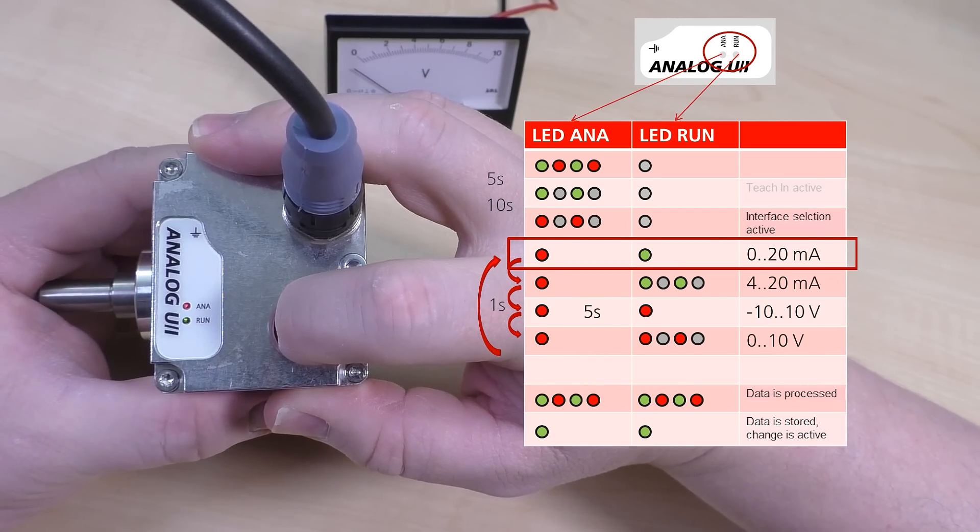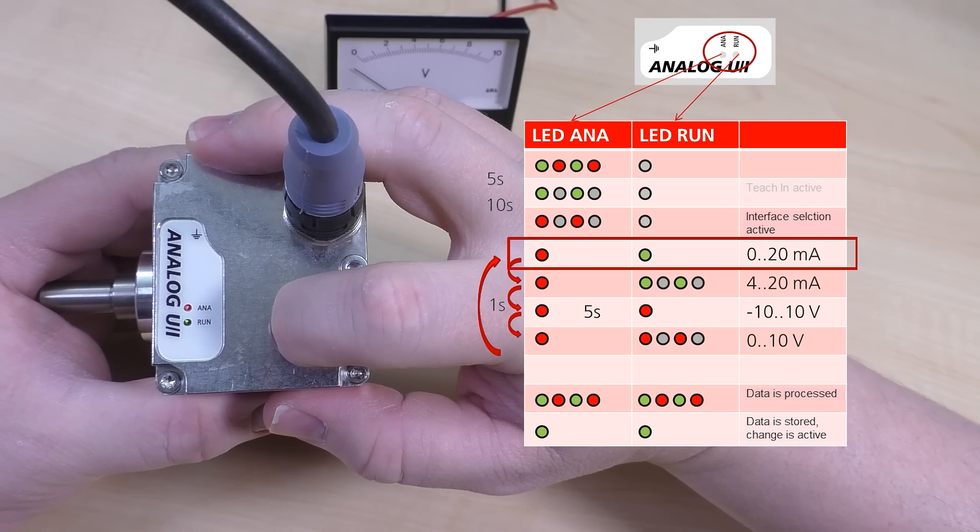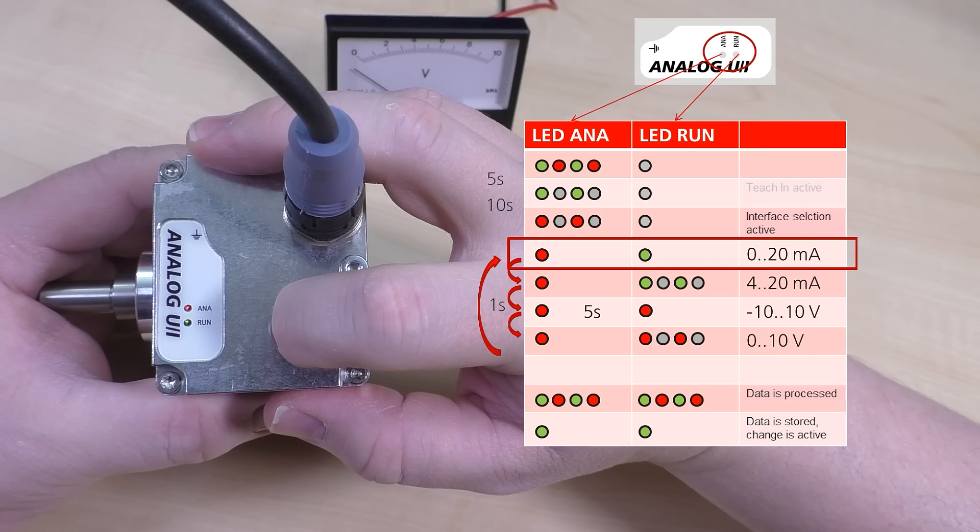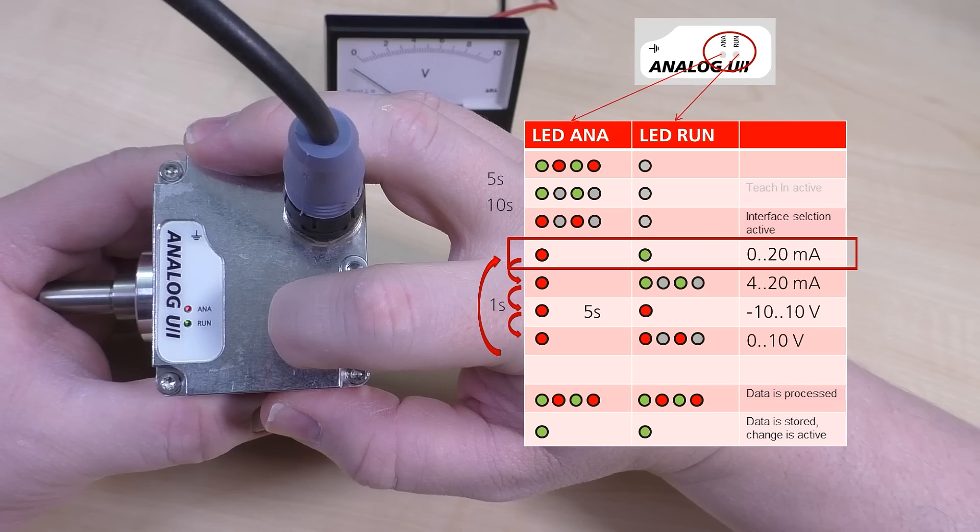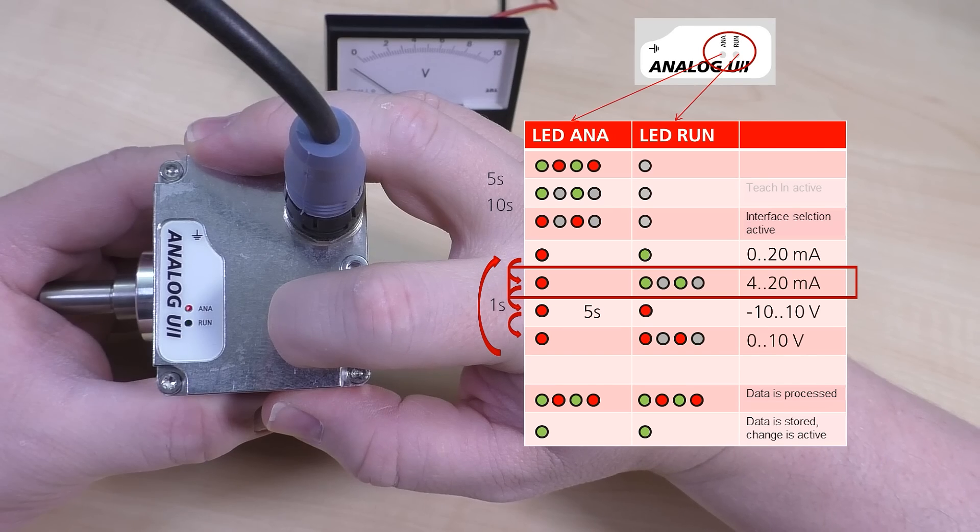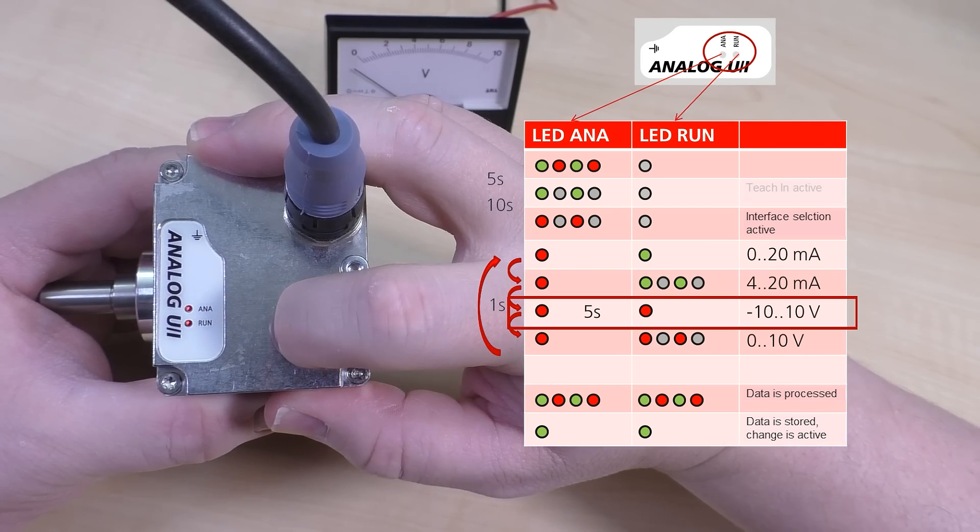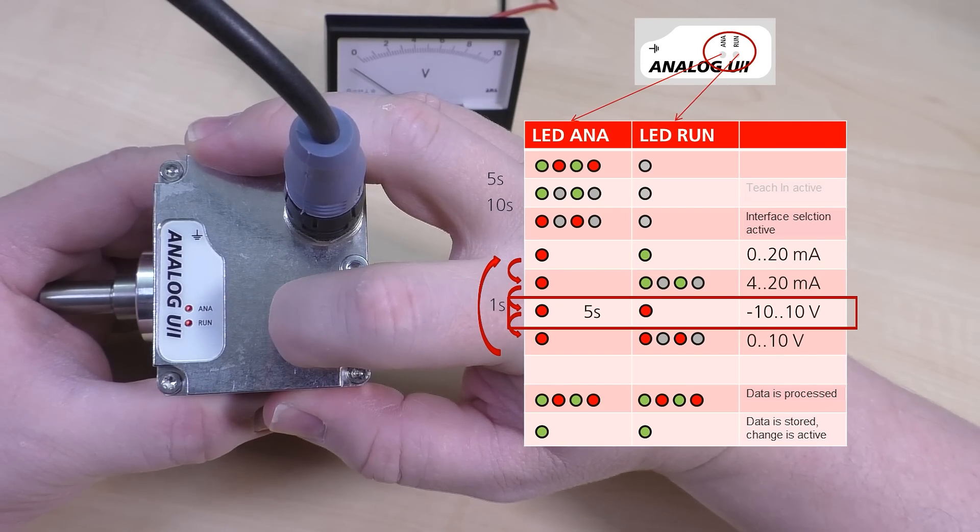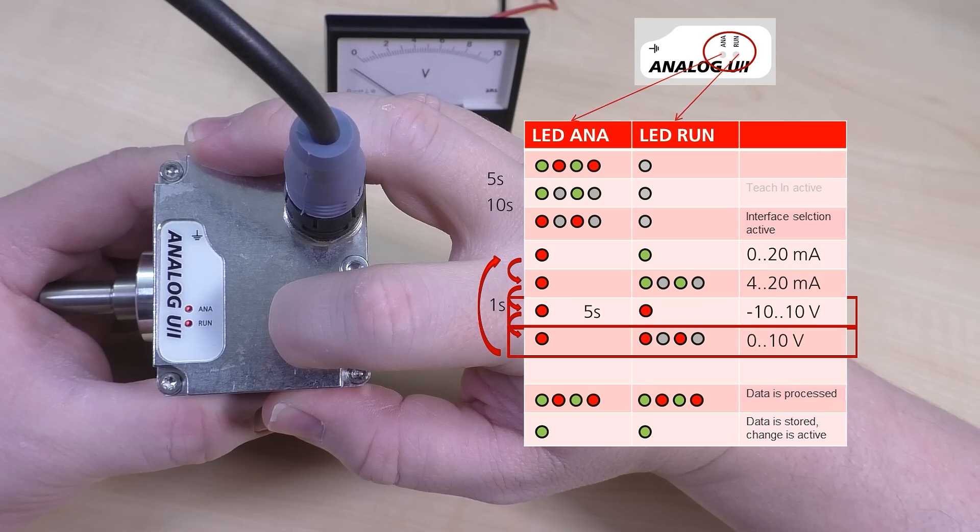The analog LED will remain solid red and the run LED indicates the selected output mode. Pressing the button will cycle through the four available output modes. A solid green run LED indicates 0 to 20 milliamps. A flashing green indicates 4 to 20 milliamps. A solid red indicates minus 10 to plus 10 volts, and a flashing red indicates 0 to 10 volts.